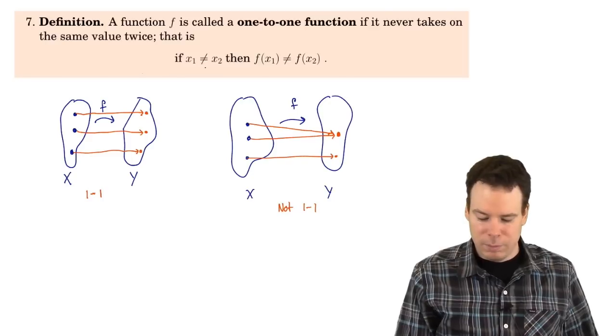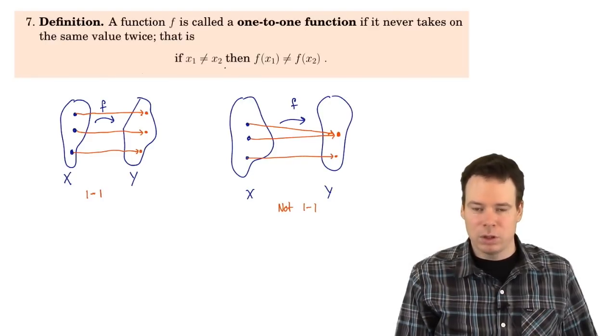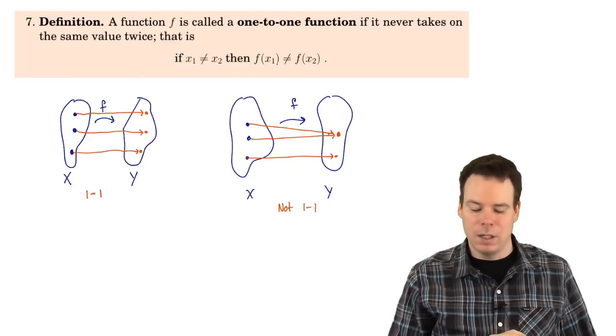This is typically written as: if the inputs are different — x₁ and x₂ are different — then the values that get sent out of the function, the function values, must be different.